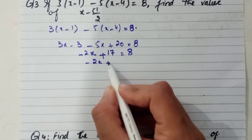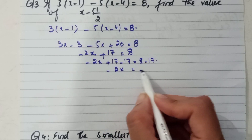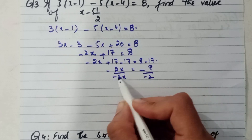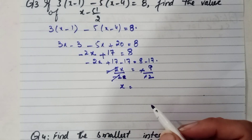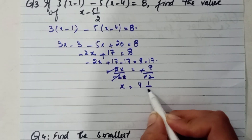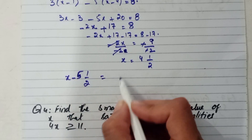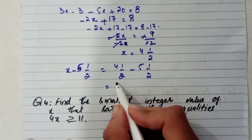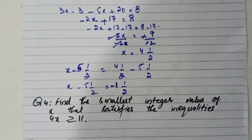We subtract both sides by 17 and get 9 minus 9. Then divide both sides by minus 2. x equals an improper fraction — written as a mixed number: 4 and 1 over 2. Now we find x minus 5 and 1 over 2, which equals 4 and 1 over 2 minus 5 and 1 over 2. Subtracting gives minus 1. That is the answer. Question number 3 is solved.